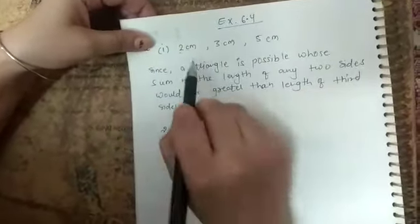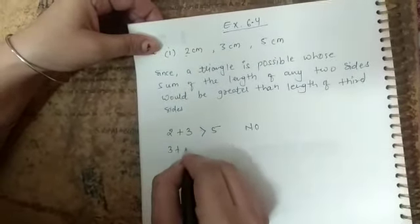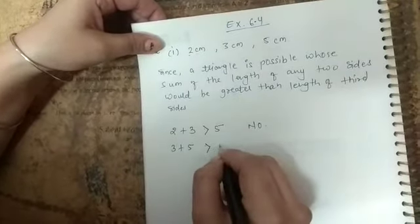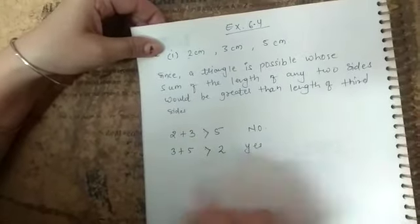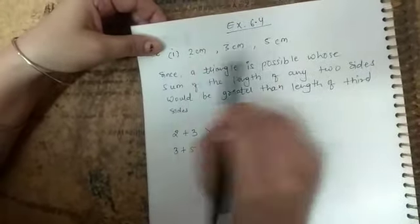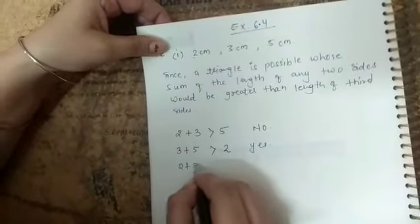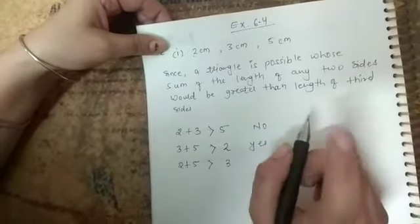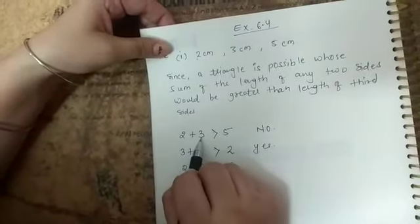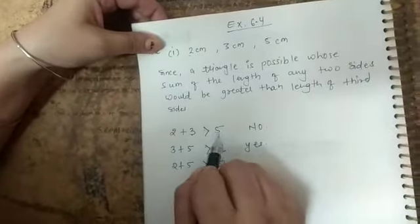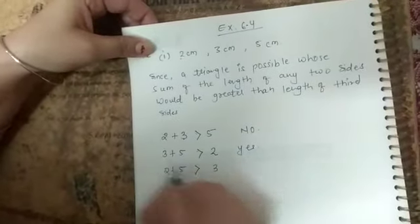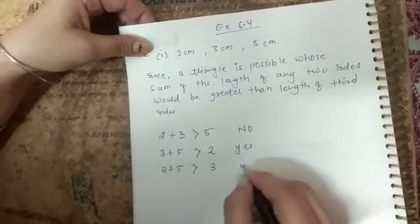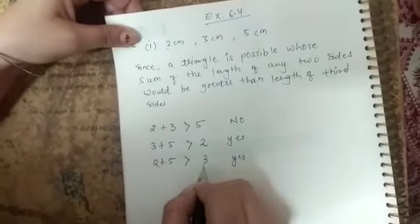Now, other two sides we are taking suppose 3 plus 5. So 3 plus 5 is 8. Definitely 8 is greater than 2. So yes. Now the third case we can take 2 plus 5 is greater than 3. At one time you have to take two sides. Two sides we are adding and it is greater than third side. So in second case it is correct. 3 plus 5 is 8, 8 is greater than 2. In third case it is also correct because 2 plus 5 is 7 is greater than 3.